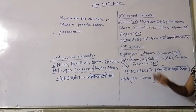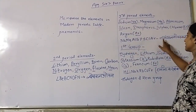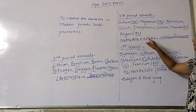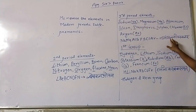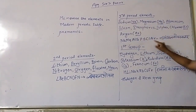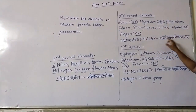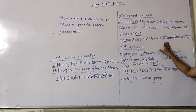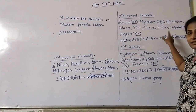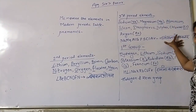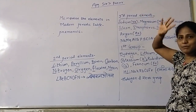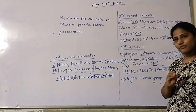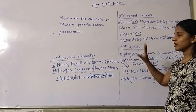Now we map the mnemonic back to the initial symbols and elements: Na → Sodium, Mg → Magnesium, Al → Aluminum, Si → Silicon, P → Phosphorus, S → Sulfur, Cl → Chlorine, Ar → Argon — that is the 'Color.' Again, practice this 5 times a day for 7 days to memorize it well.